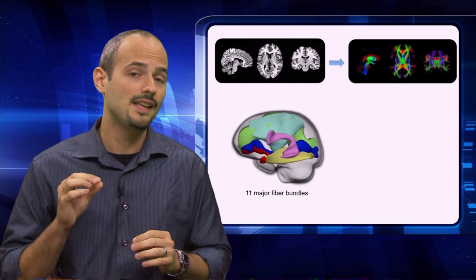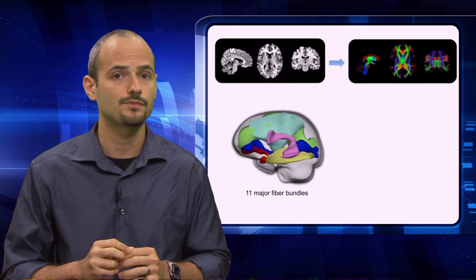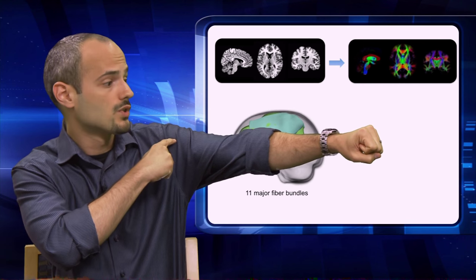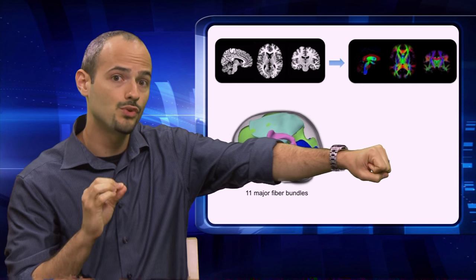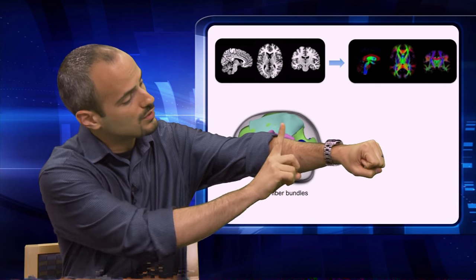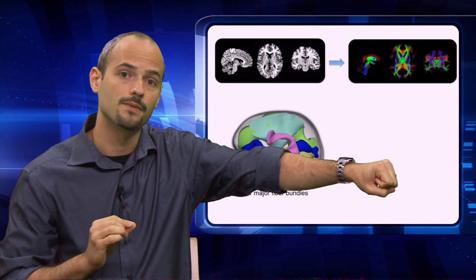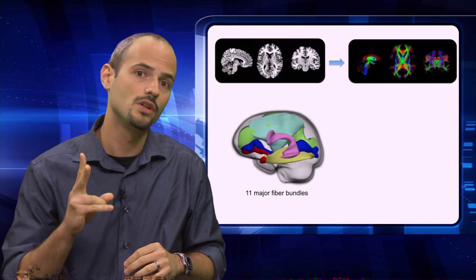For each of these 11 major tracts, we're going to estimate two properties. So think of these connections as a water hose. Water in a hose can flow along the axis of the hose, so that would be the axial diffusivity, or along the radius of the hose, that would be the radial diffusivity. So for each of these 11 major tracts, we have these two different properties.